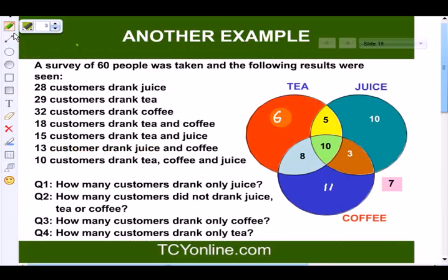Now let's look at another example. A survey of 60 people was taken with the following results: 28 customers drank juice, 29 customers drank tea, and 32 customers drank coffee. Additionally, 30 customers drank both tea, coffee, and juice. We can convert this into a Venn diagram, and it looks like this.